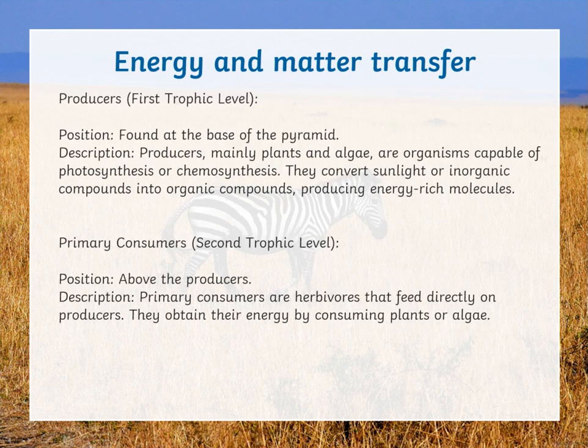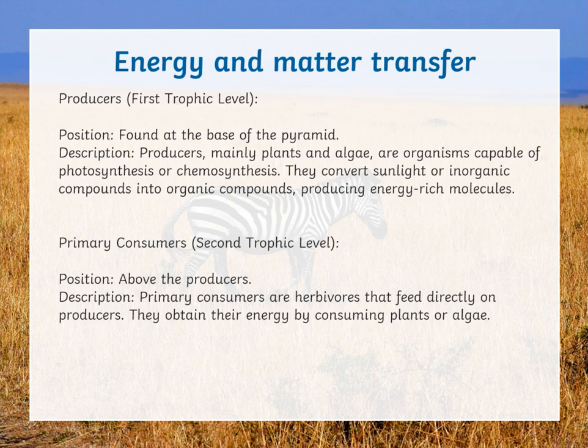Firstly, we have the first trophic level, which are the producers. Their position is found at the base of the pyramid. Producers — mainly plants and algae — are organisms capable of photosynthesis or chemosynthesis. They convert sunlight or inorganic compounds into organic compounds, producing energy-rich molecules.